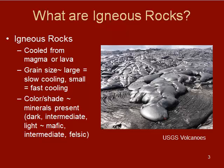Large grains equals slow cooling, so the building blocks within that magma have had a chance to find each other within that rock. If they're small grain sizes — very fine grain — that means it's cooled super fast, so those building blocks didn't have a chance to find one another. And the color or shade corresponds to the minerals that are present. We'll go into those details a little bit more in the identification section.